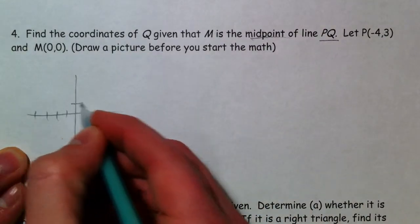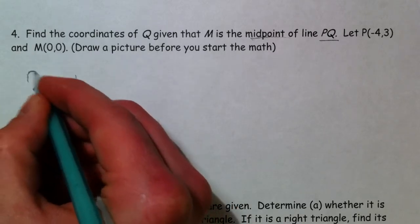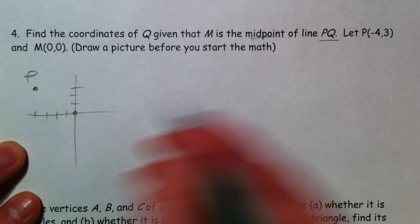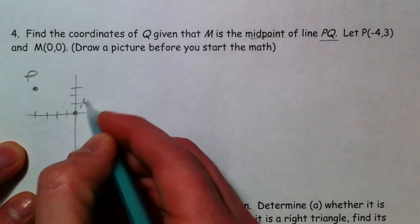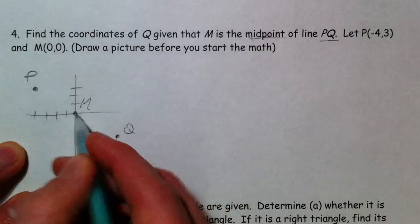So we have point P at (-4, 3) and some M at (0, 0), where M is the midpoint of PQ.